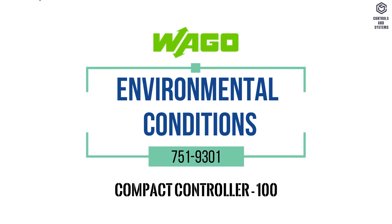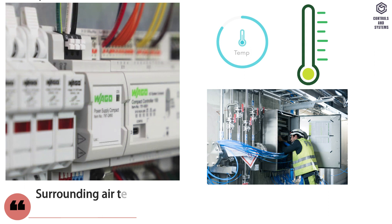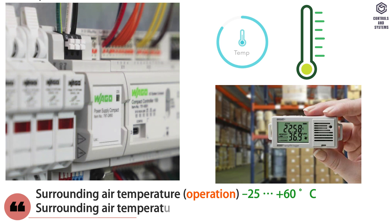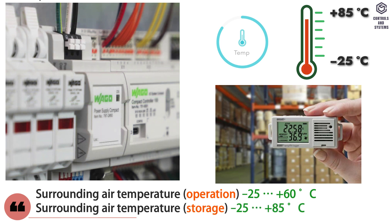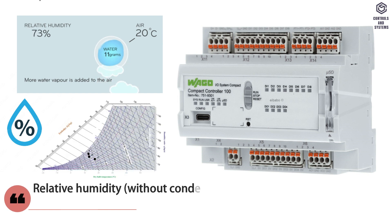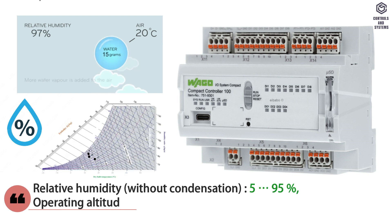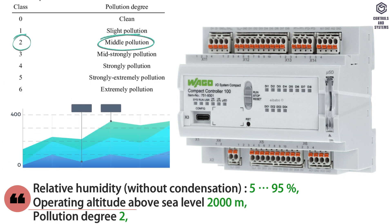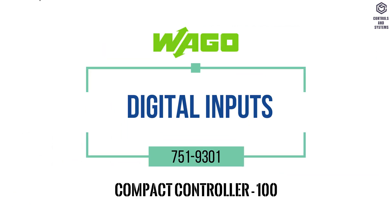Environmental conditions: Surrounding air temperature during operation is -25°C to +60°C, and during storage is -25°C to +85°C. Relative humidity without condensation is 5 to 95%. Operating altitude above sea level is 2000 meters. Pollution degree is 2.